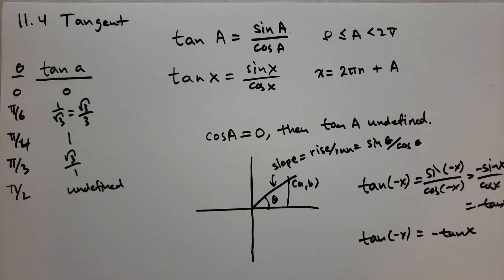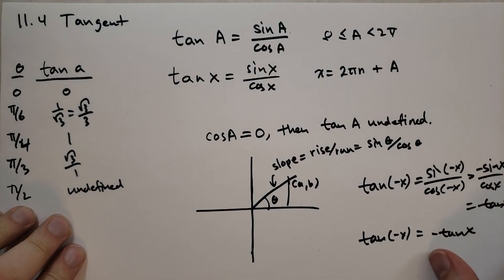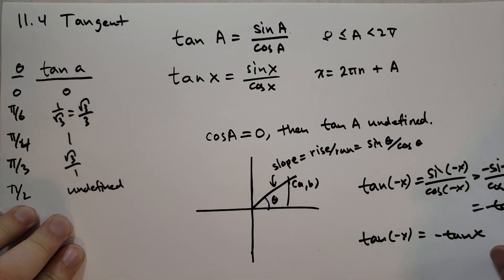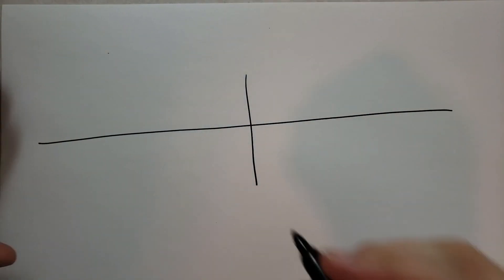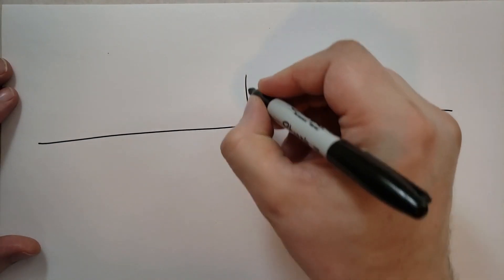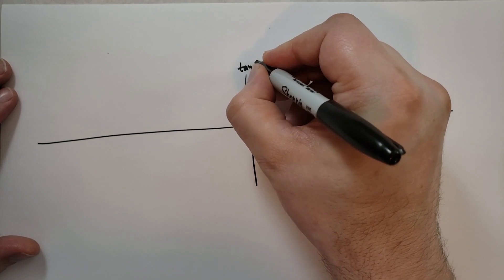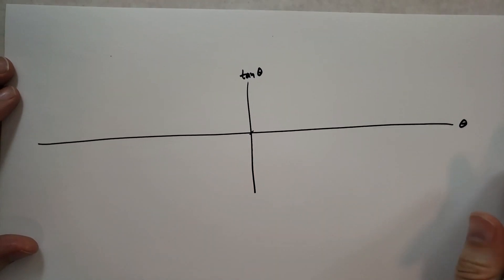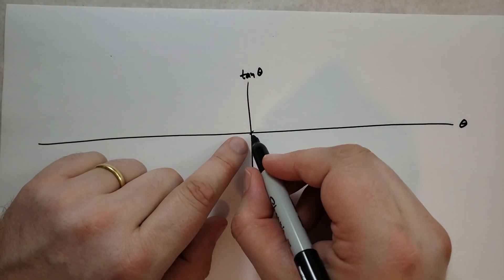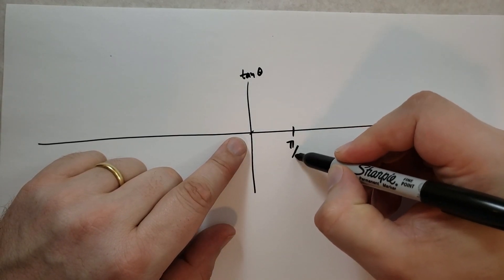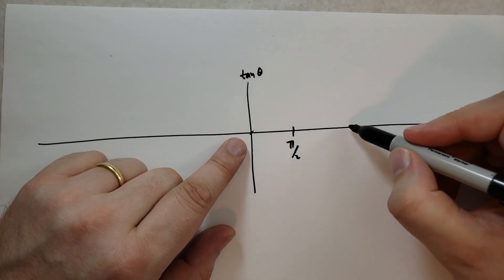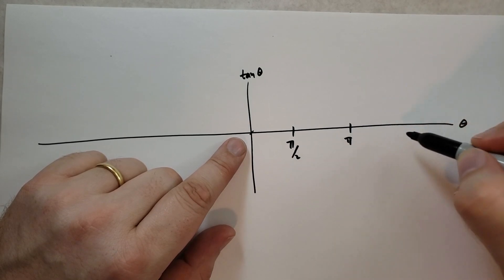We don't really have much else to talk about it except we can graph what tangent will look like. This is a fairly weird graph. I'm going to sketch it out. You're going to have to go online if you want to see a perfect graph. So at zero, this is going to be tangent of theta, and this is going to be theta. At theta equals zero, tangent of theta is zero. And then when we get to π over 2, it becomes undefined, and we get π, it's going to be zero again. And we get 3π over 2, it's going to be undefined again. And with a negative π over 2, and we have negative π, and we have negative 3π over 2.